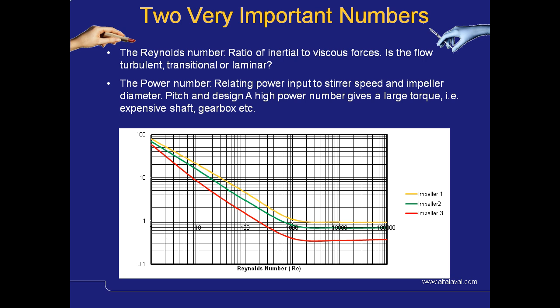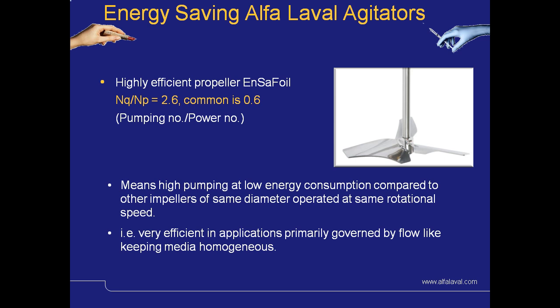Here is an indication of two of the most important dimensionless numbers. This is the Reynolds number, which is relative to the power number, and depending on the impeller type and configuration, this will determine the power consumption and torque required. A high power number gives a large torque, and therefore an expensive shaft, gearbox and motor size, and therefore high operating costs. The highly efficient Ensefoil propeller has a very good ratio of pumping number to power number in the region of 2.6, compared to standard propeller agitators where this is normally only about 0.6. This means high pumping at low energy consumption, which can be very efficient in applications primarily governed by flow, like keeping a media homogeneous.